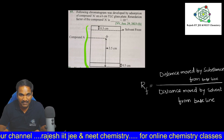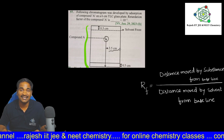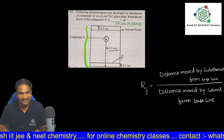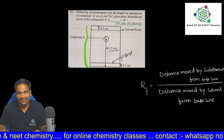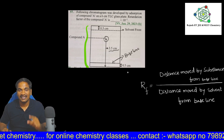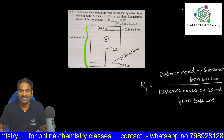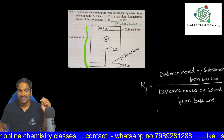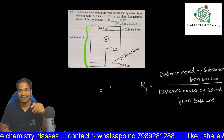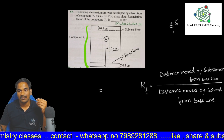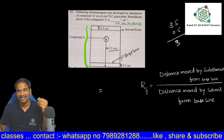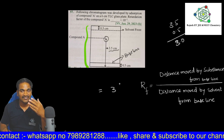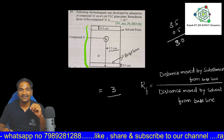Point A traveled 3.5 centimeters from the plate edge, but what is the baseline? The baseline is at 0.5 centimeters from the bottom. So the distance moved by substance A from the baseline is 3.5 minus 0.5, which equals 3 centimeters.